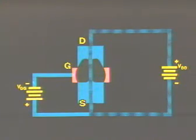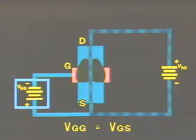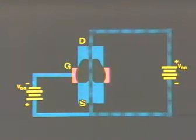VGG is the same as V sub GS, the voltage across the gate and source leads. It provides additional voltage to the reverse biasing of the gate channel junction by means of the gate source connection as well as the gate drain connection.